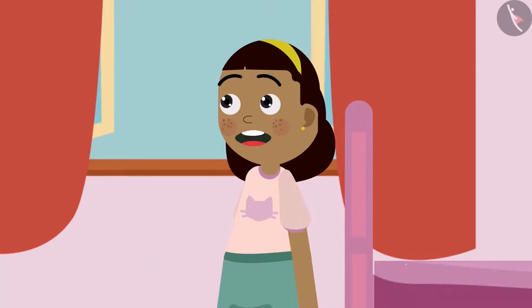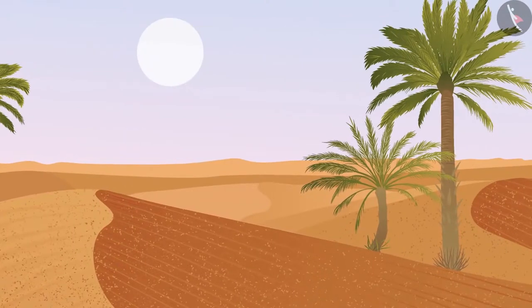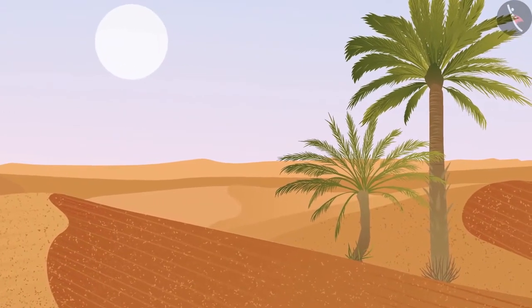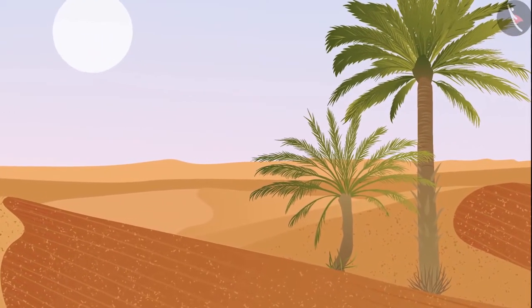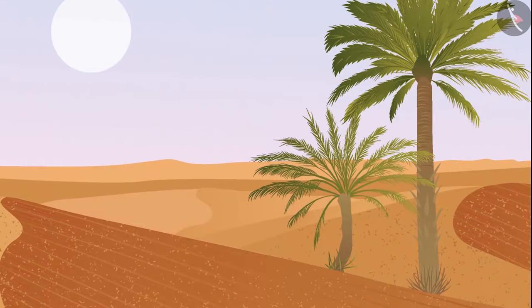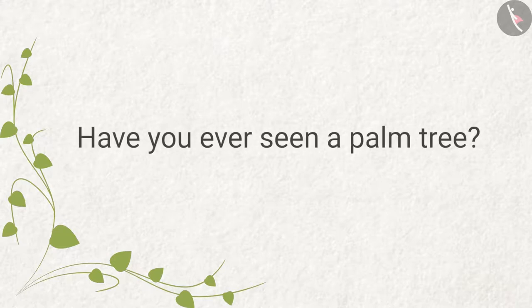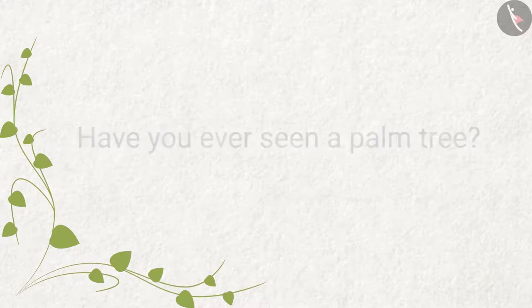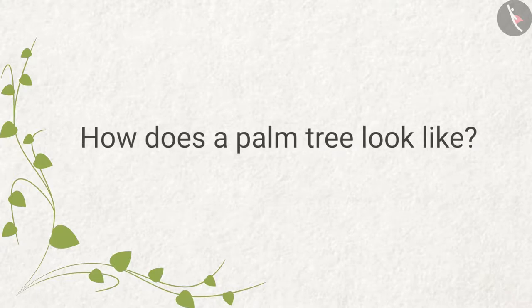Ziya asks if any trees grow there at all. Her father says mostly dead palm trees are seen, because only those trees can grow in the desert. The video then asks the viewer: have you ever seen a palm tree, and how does a palm tree look?